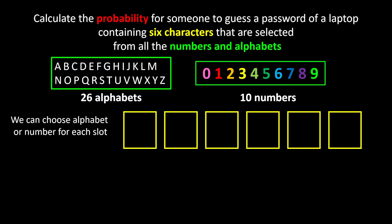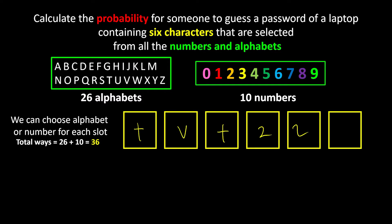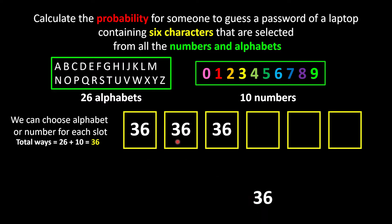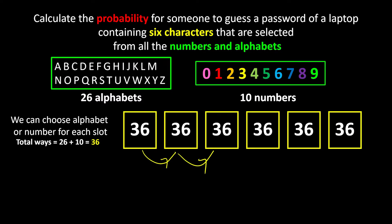Since we are free to choose numbers and alphabets, we can combine the choices, meaning for each of the 6 slots I can have 36 choices. Don't forget we can repeat the same letters again and again because that's how a password works — for example, a password like TVT222 is fine. So for each slot I have 36 choices. Since it's a continuous event, we multiply: 36 times 36 for 6 times, which is 36 to the power of 6.